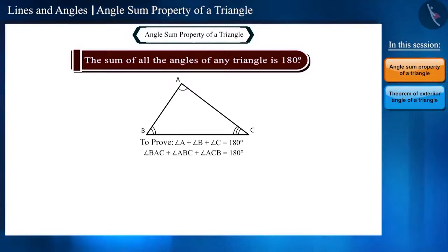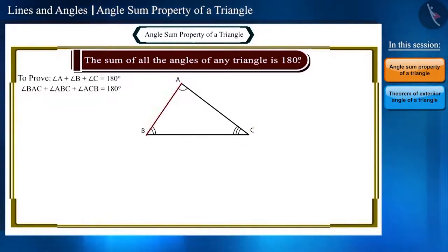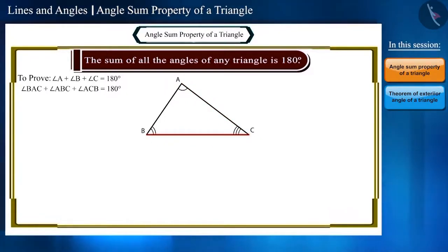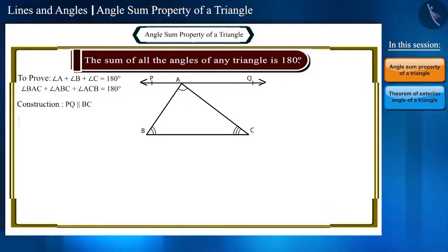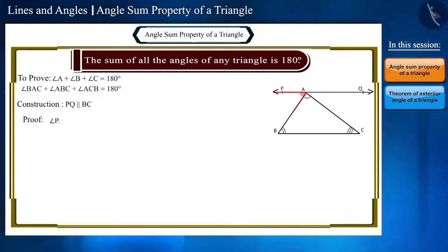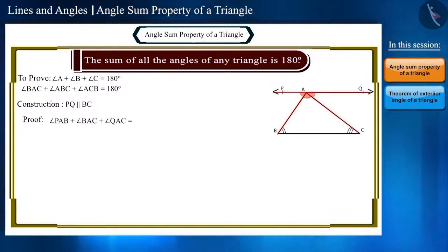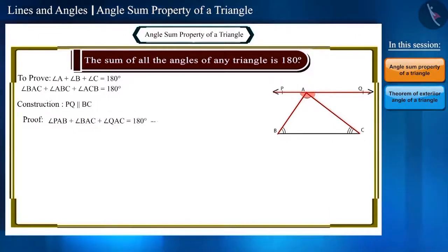We can also write it as angle BAC plus angle ABC plus angle ACB equals 180 degrees. Keep in mind that the alphabet of the angle you are referring to is in the middle. Now let's draw a line parallel to side BC passing through the third vertex A. Let's call this line PQ. The sum of angle PAB plus angle BAC plus angle QAC will be 180 degrees because they are angles formed on a straight line. Let us call it equation one.